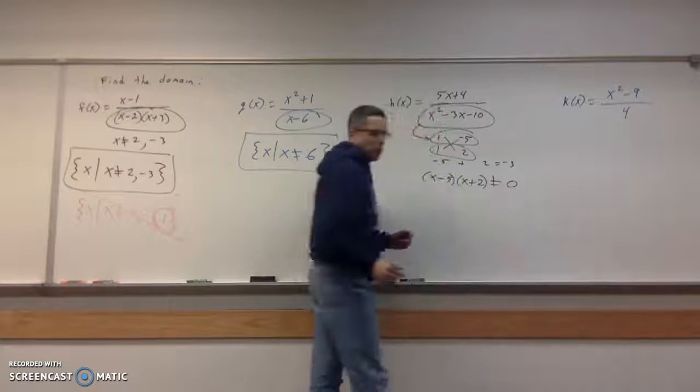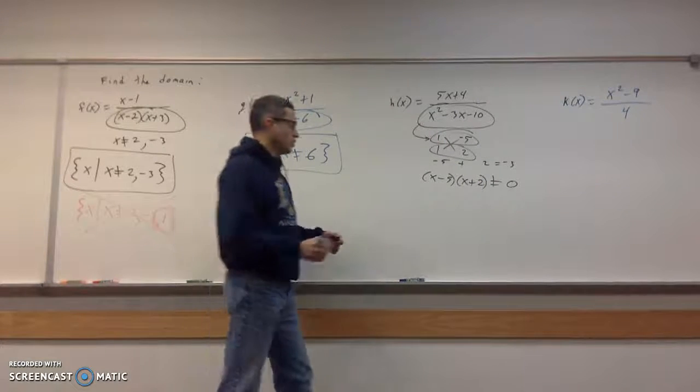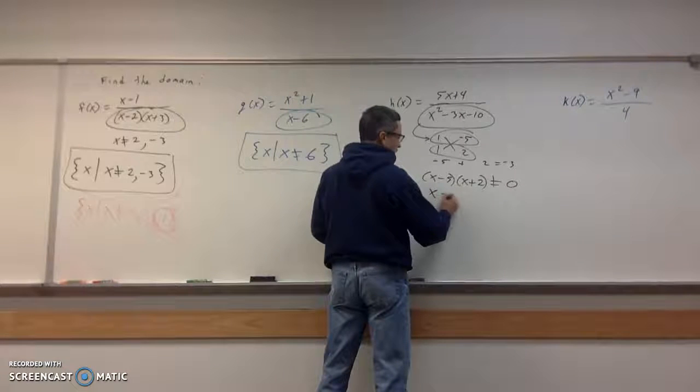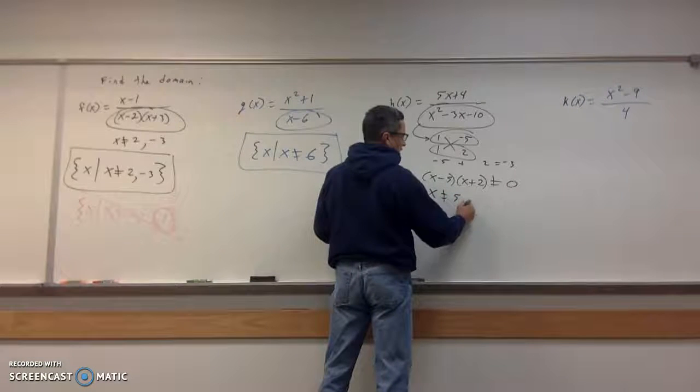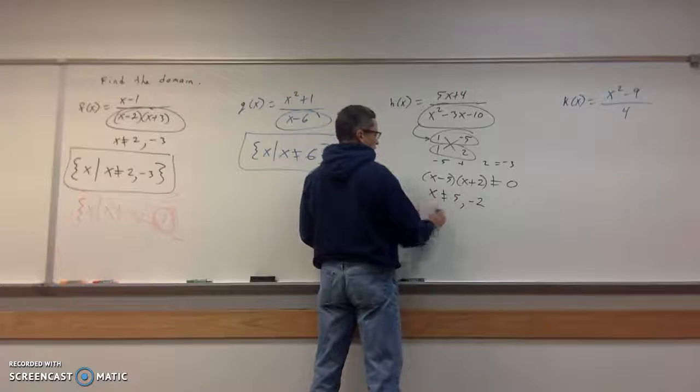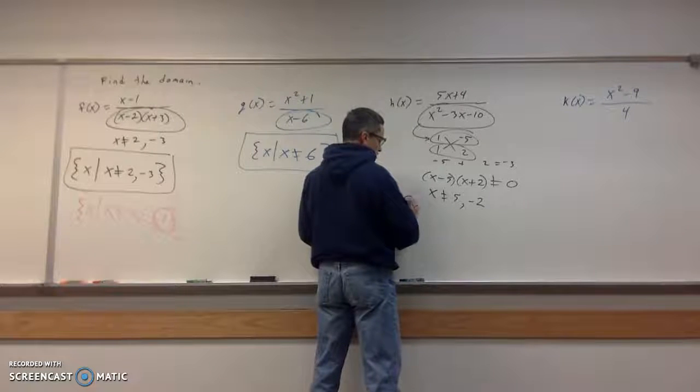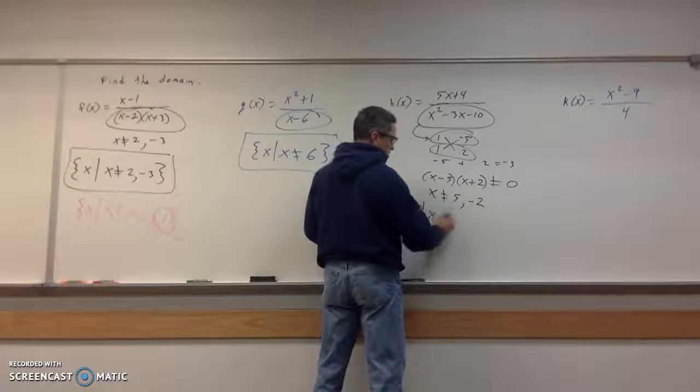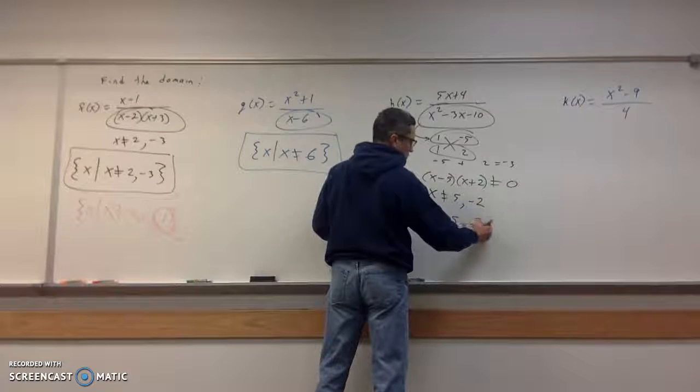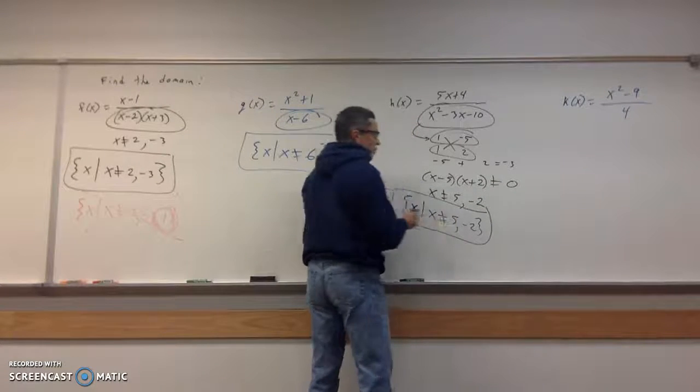I don't want them to equal 0, okay? Because that makes the denominator equal to 0. So that means x could not equal 5 or negative 2. So it's the values of x such that x does not equal 5 or negative 2. That's that one.